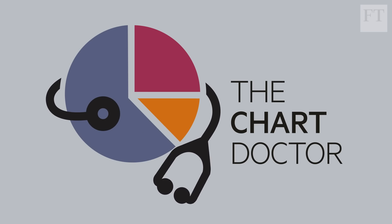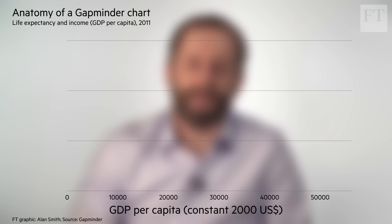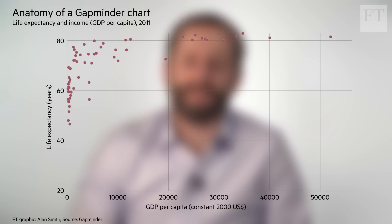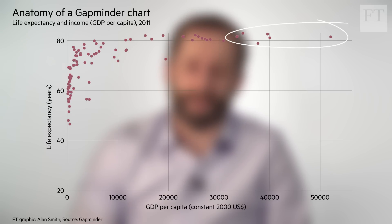We're going to have a look at the anatomy of a bubble chart by going back to first principles. The data behind the chart starts life as a simple scatter plot. In this famous example, Rosling uses income on the x-axis and life expectancy on the y-axis. Each dot on the chart represents a country, and we can see that there are some variations between those countries in the top right and those in the bottom left.